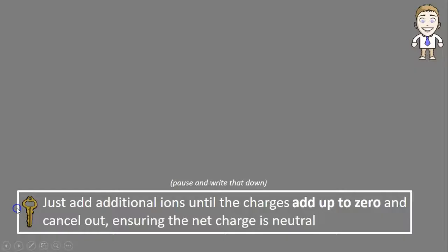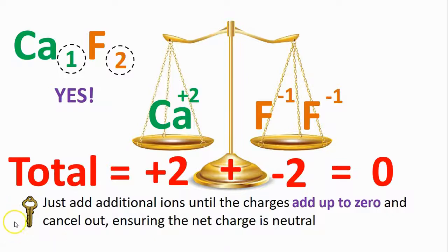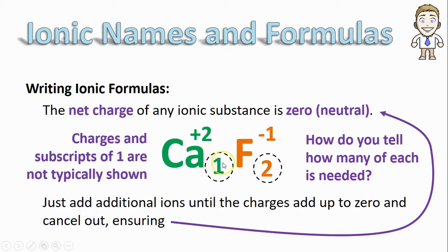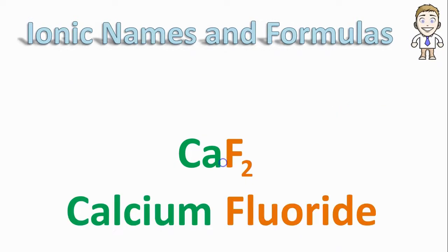Before we leave this example, let's just emphasize one more time. All you're doing when you write a formula is adding additional ions until the charges add up to zero and cancel out. So now that I know my formula is Ca1F2, there's just two final corrections. Charges and subscripts of one aren't typically shown. So even though you may write them to help work through the process, the final version of your formula shouldn't have either of those things written down. Meaning my final formula for calcium fluoride is just CaF2.